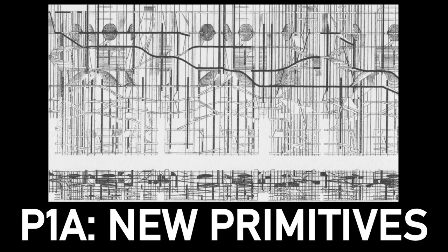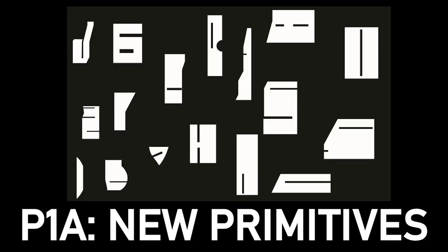We were given a building or a site and had to find primitive shapes from the section drawing, plan drawing, or elevation drawing of that site. I got the Seattle Central Library by OMA — they have a very cool section that the library is known for. I took that section and extracted a bunch of primitive shapes from it. That was just project one A.